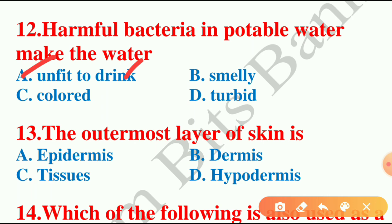Moving on to the next question: the outermost layer of skin is — epidermis, dermis, tissues, or hypodermis? The answer is option A — epidermis. The epidermis is the outermost layer of our skin and is very tough. A key point: our skin is the largest organ in our body, and the epidermis is its first line of defense.